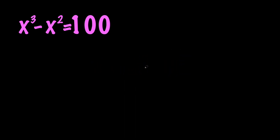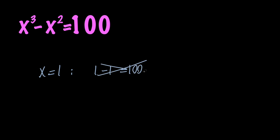First of all, we can go ahead and try to guess and check the solutions. We can go ahead and replace x with some values. For example, we can replace x with 1 and get 1 minus 1 equals 100, which is something completely false.